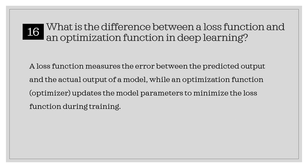What is the difference between a loss function and an optimization function in deep learning? A loss function measures the error between the predicted output and the actual output of a model, while an optimization function, or optimizer, updates the model parameters to minimize the loss function during training.